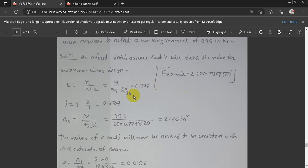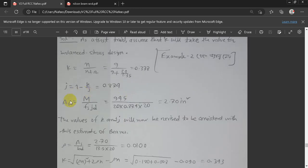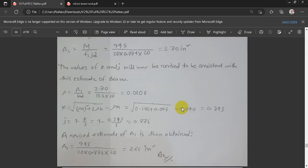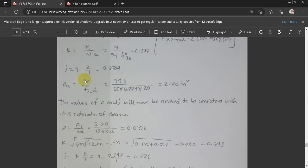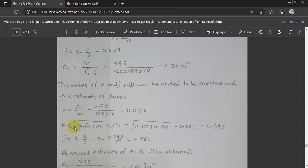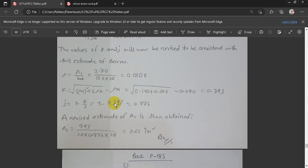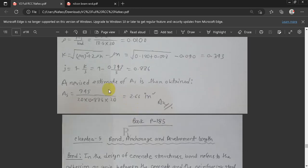j is 0.874. AS equals M divided by FS times j times D. So AS is 2.70 inch square. We have to revise the k and j value. The reinforcement ratio rho equals AS by BD. AS value is 2.70, and rho is 0.0100. Then k equals root over rho n squared plus 2 rho n minus rho n. The value is 0.343. And j equals 1 minus k by 3. The value is 0.886.